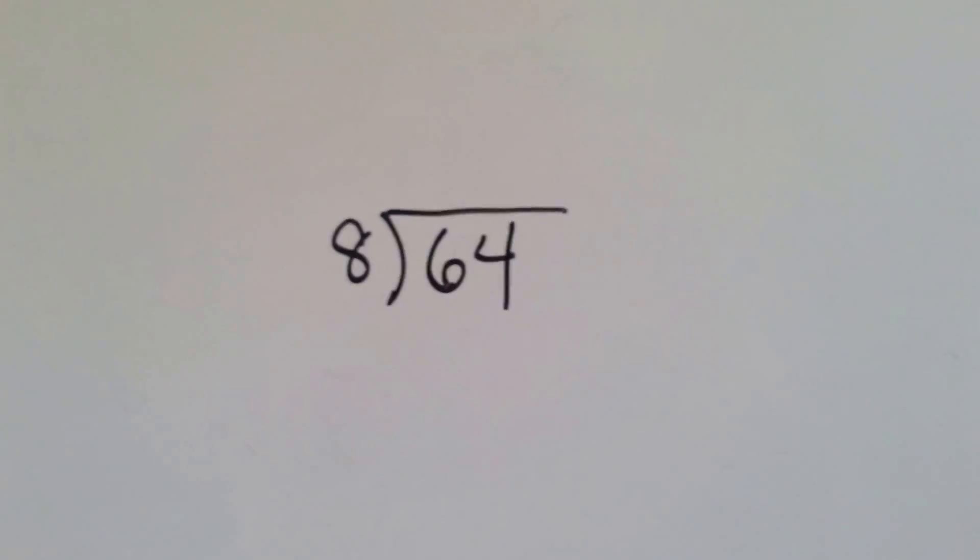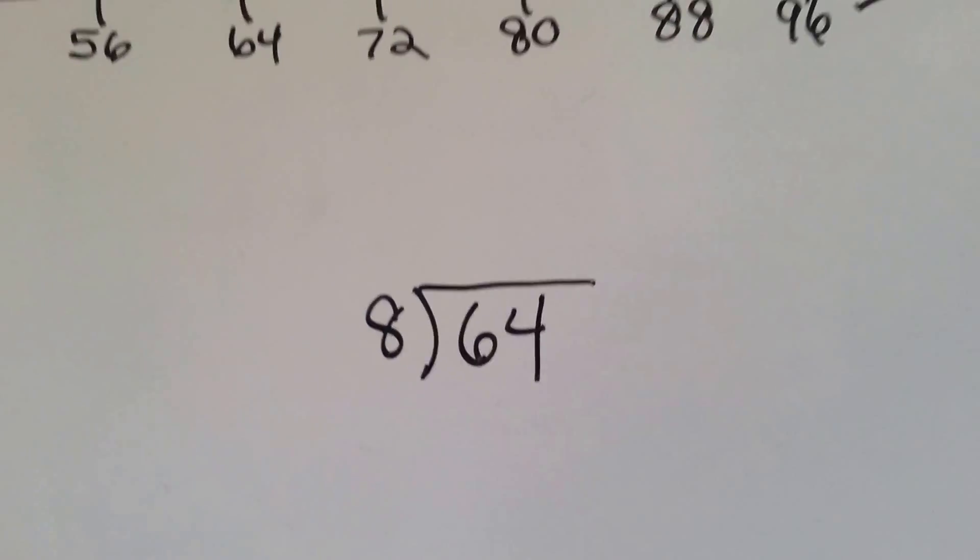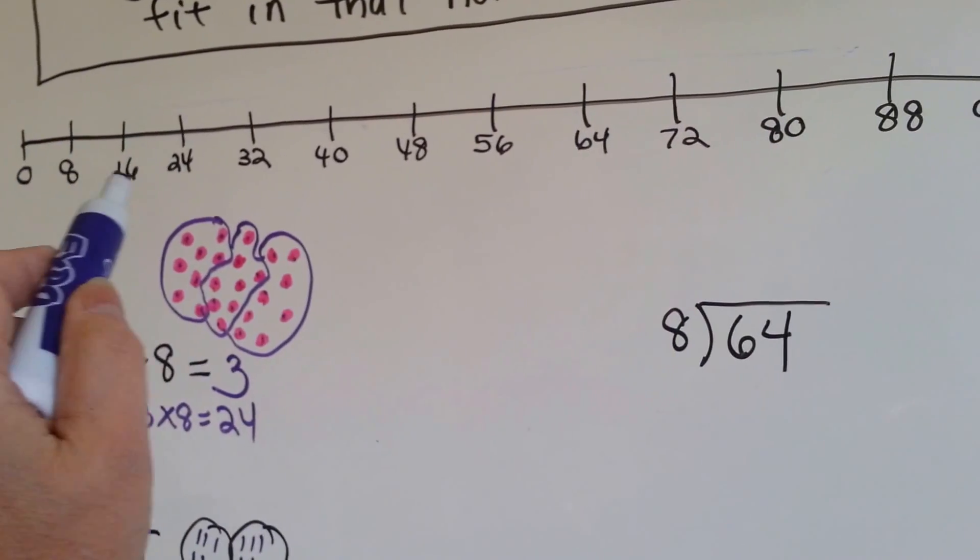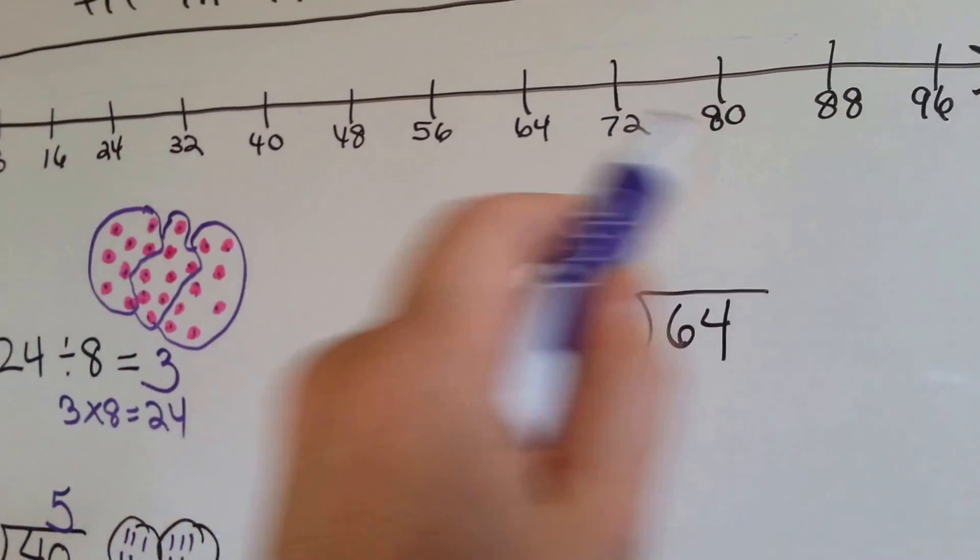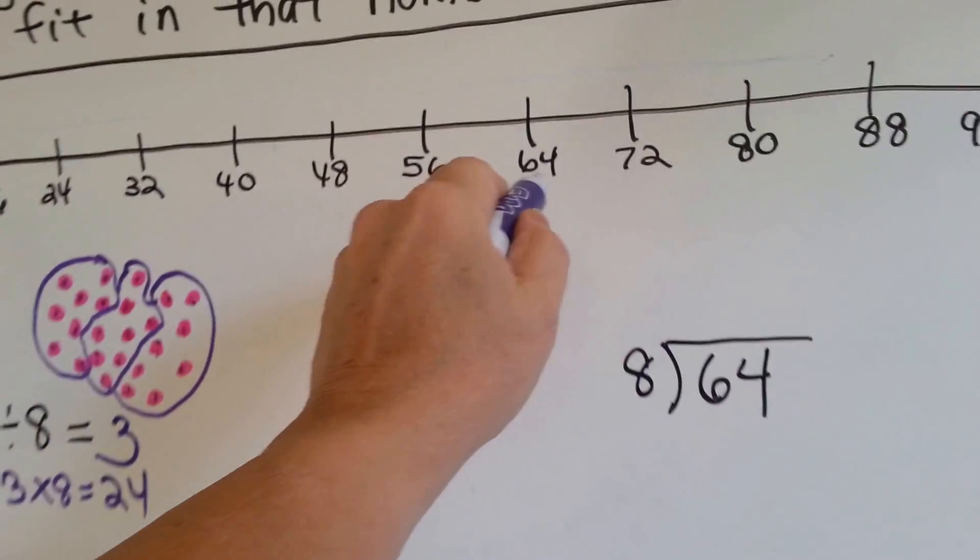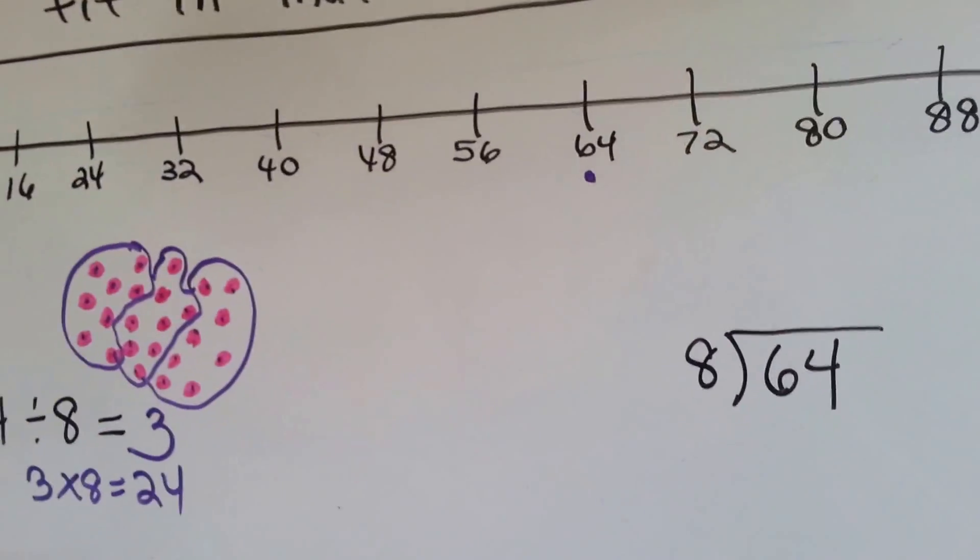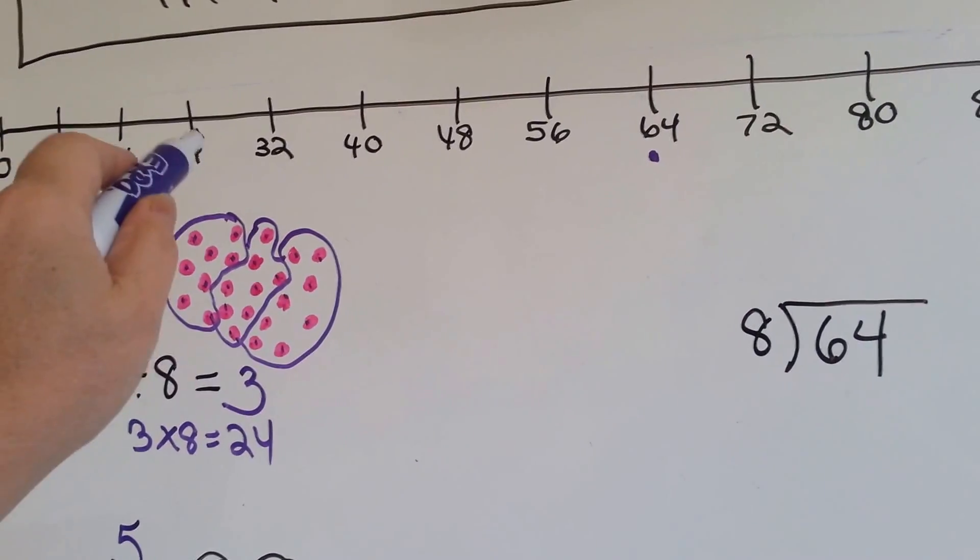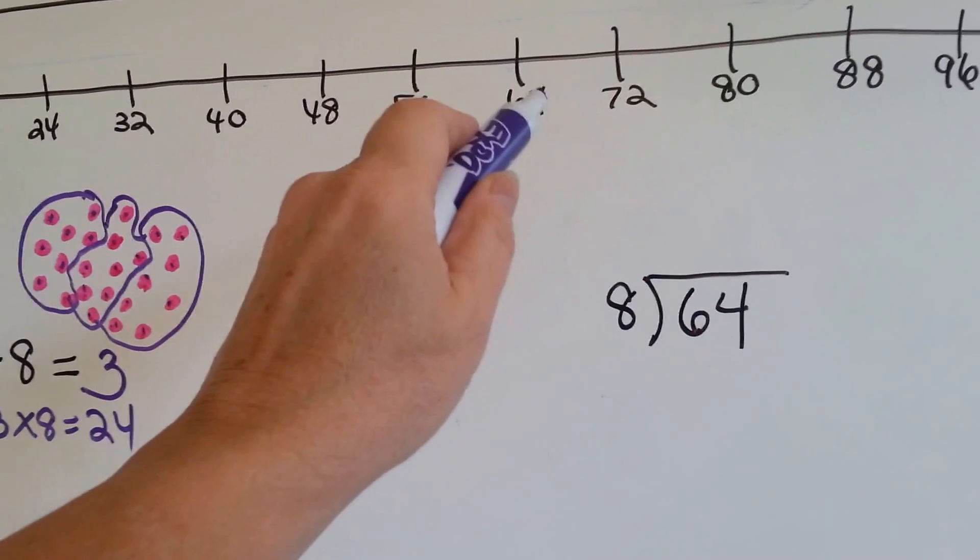8 goes into 64, how many times? Let's use our number line this time. Here's 64. We've counted by 8s going all the way up. Here's the 64 where we're trying to get to. And we're going to skip count and see how many times we do it. Ready? 1, 2, 3, 4, 5, 6, 7, 8.